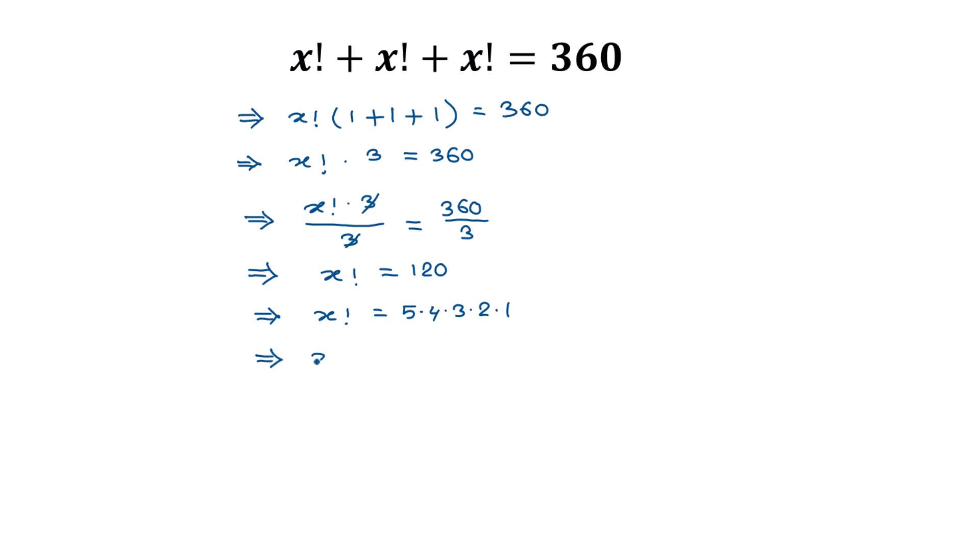Or left side x factorial is equal to 5 times 4 times 3 times 2 times 1. This is 5 factorial, so we can write the right side as 5 factorial. Now comparing both sides, x factorial is...